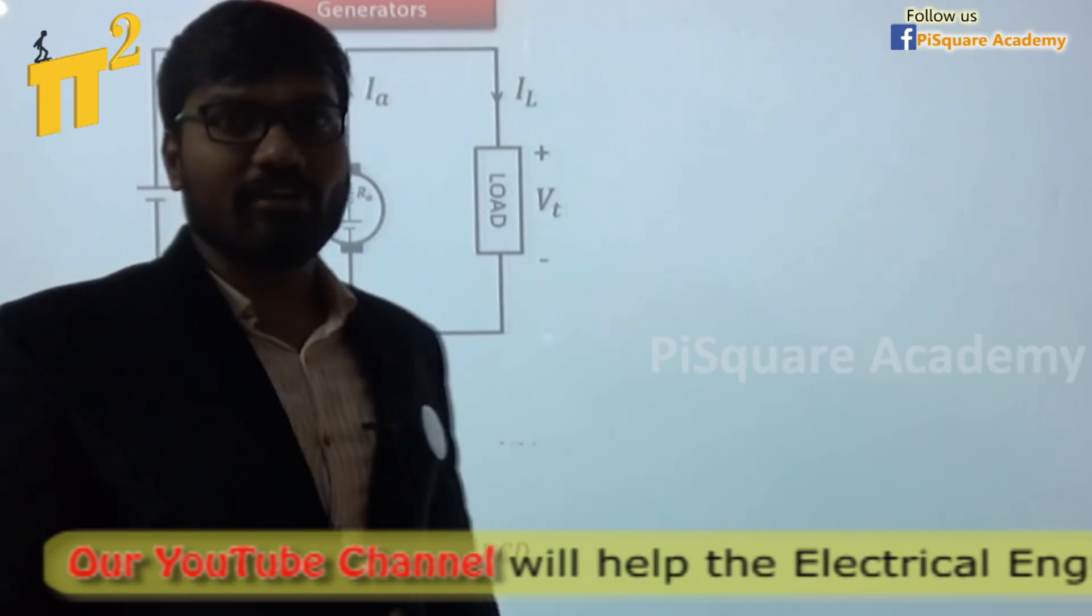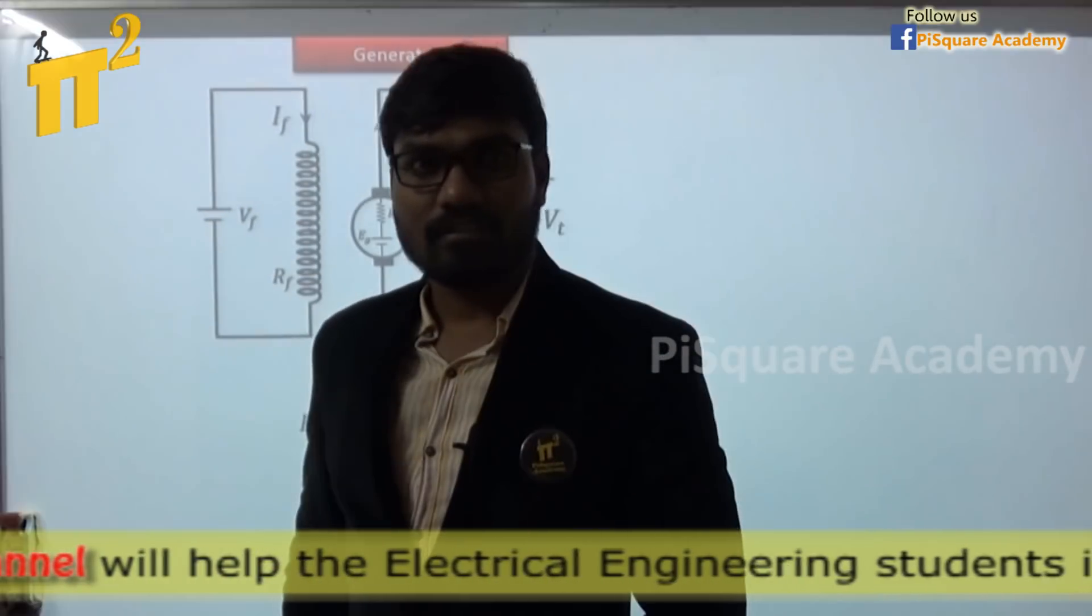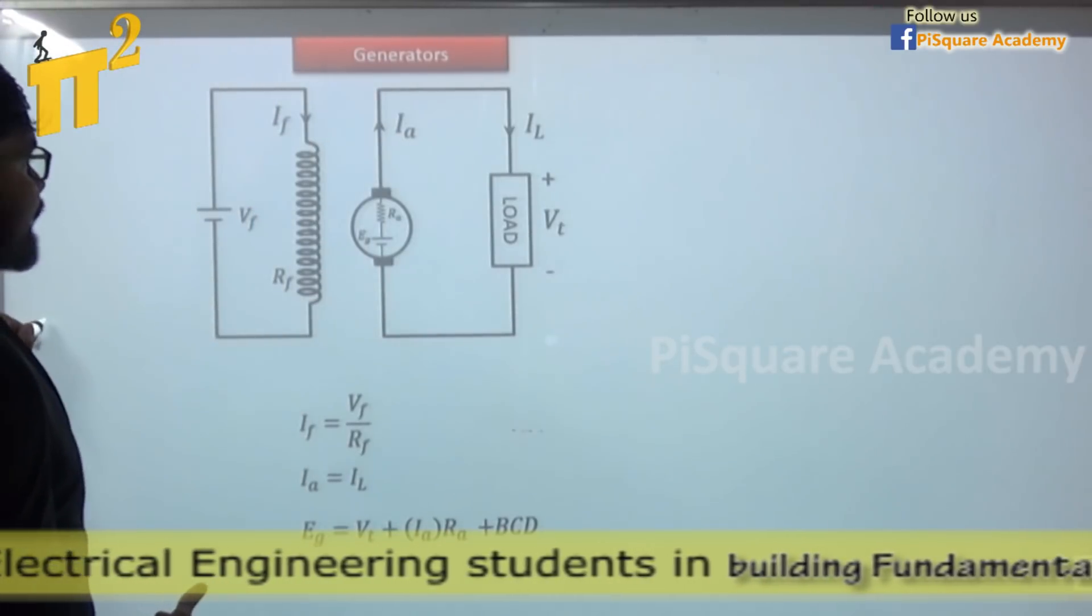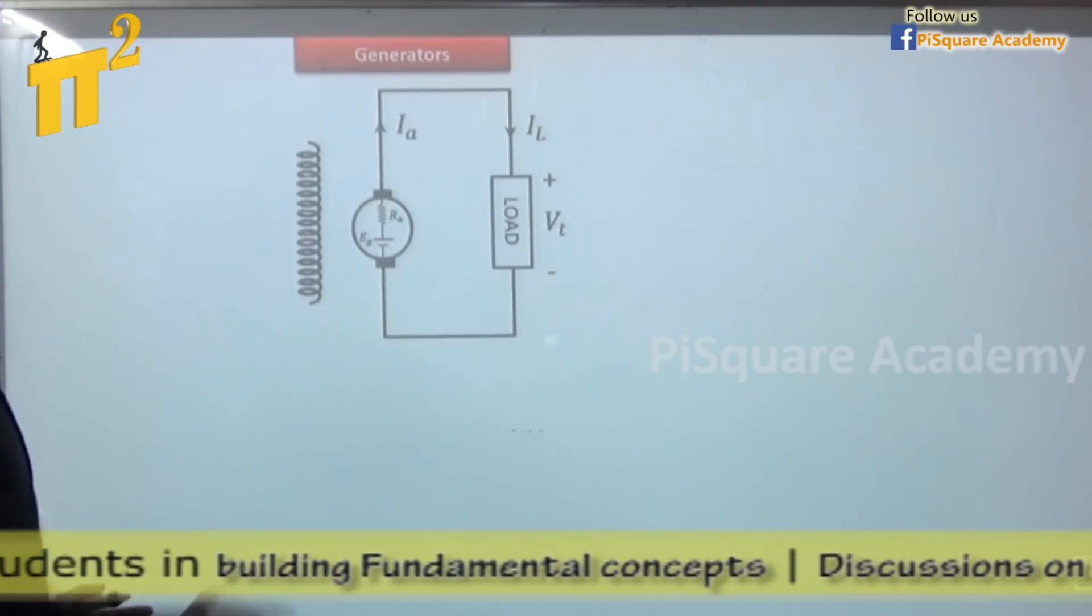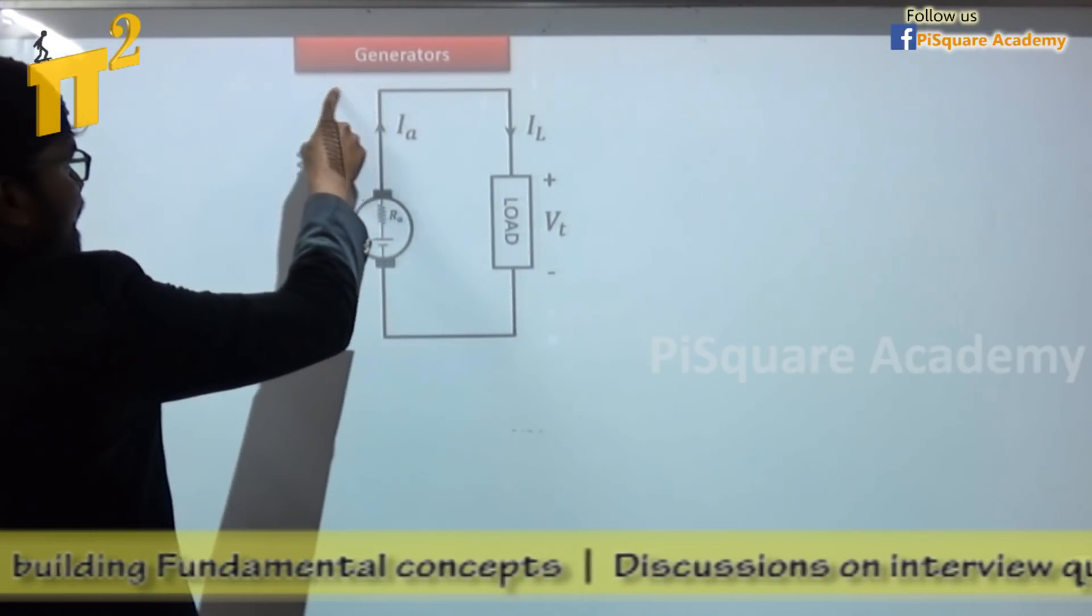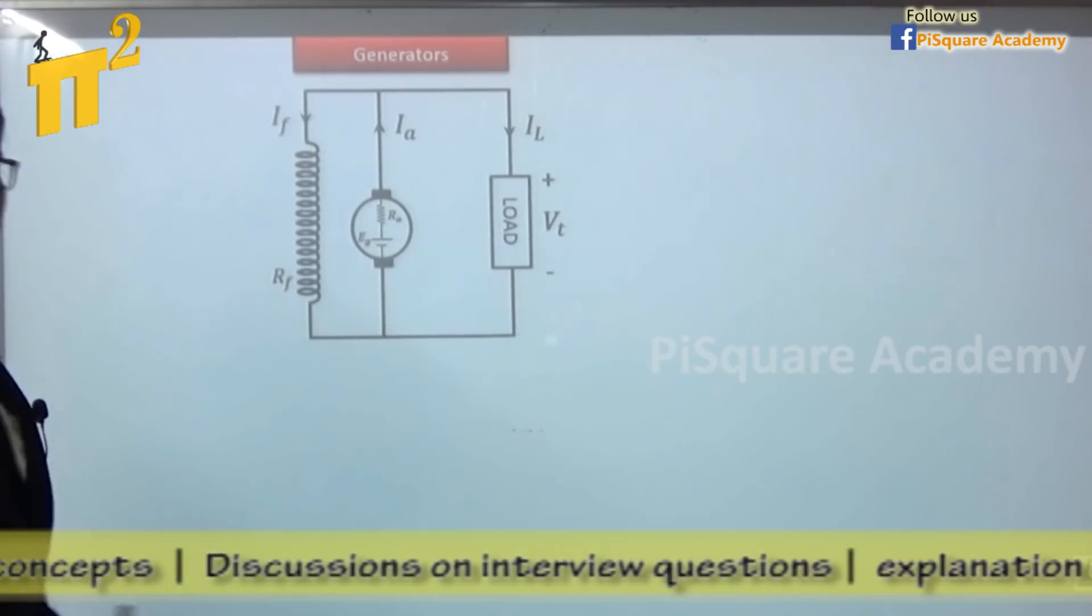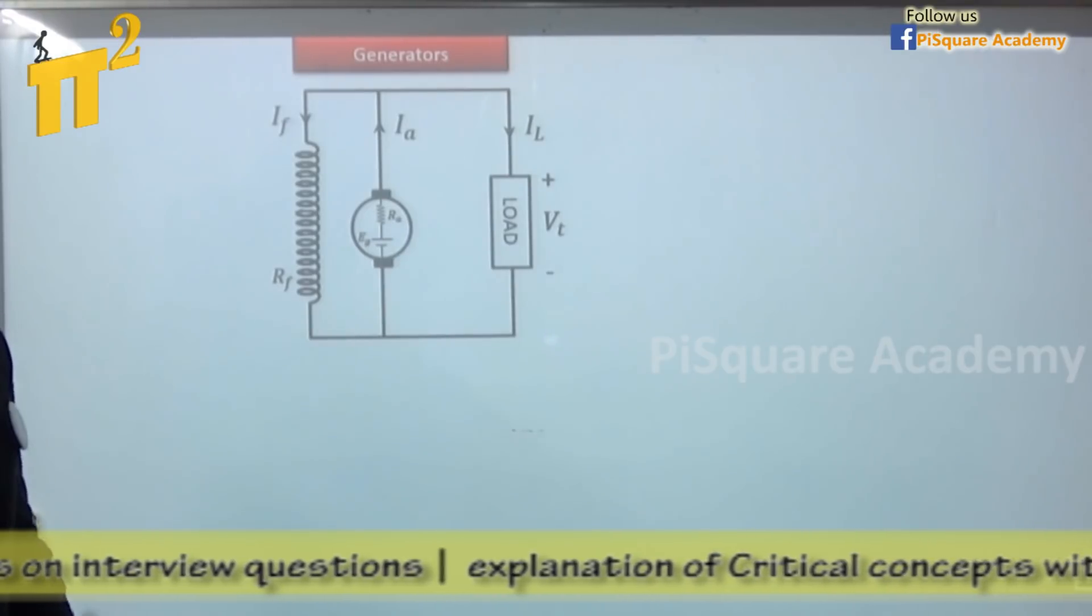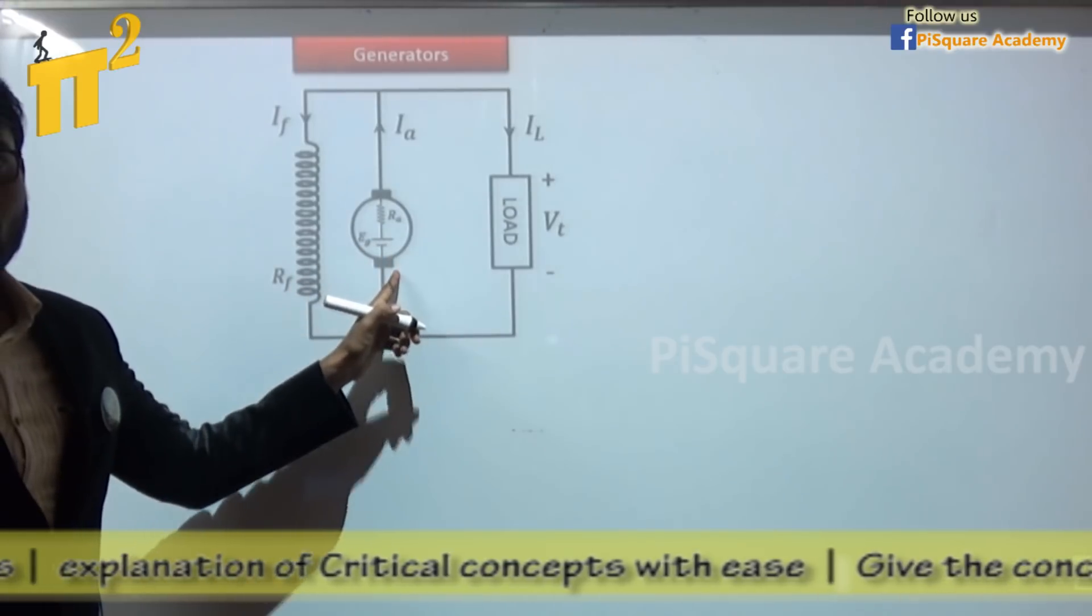Now question comes, what if I don't have the availability of DC electrical supply? There the idea began to use generated DC voltage itself to create the magnetic field. So as I don't have electrical supply, DC electrical supply, what I am doing? I am using the same generated voltage, I am connecting across the field to create the magnetic flux. So by connecting this field winding in parallel with the armature, our problem is solved.